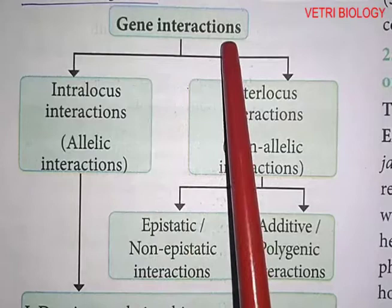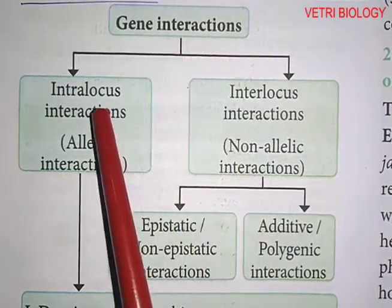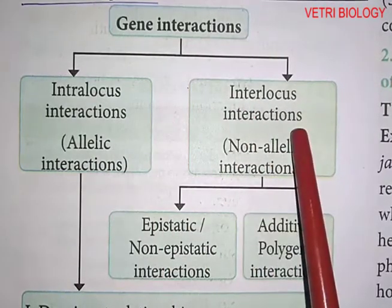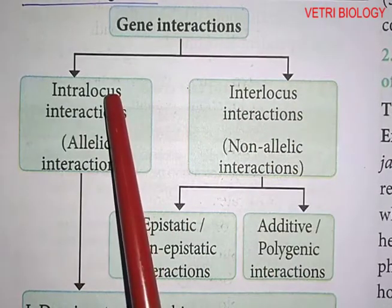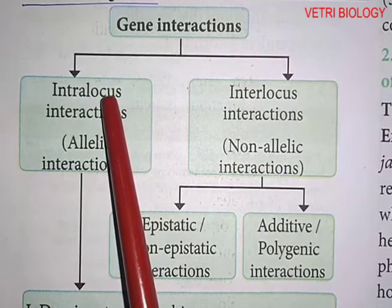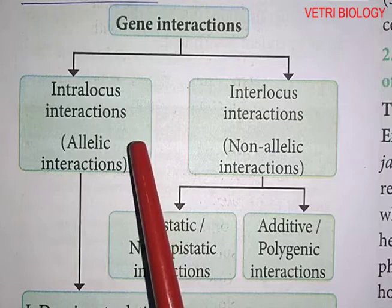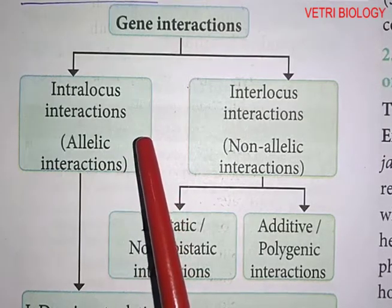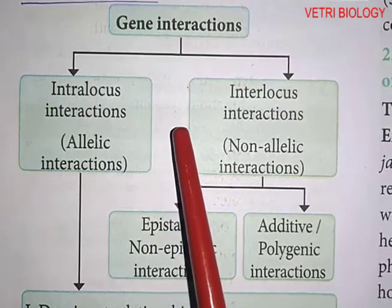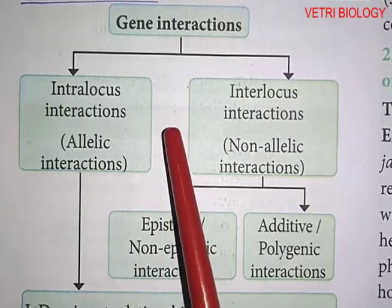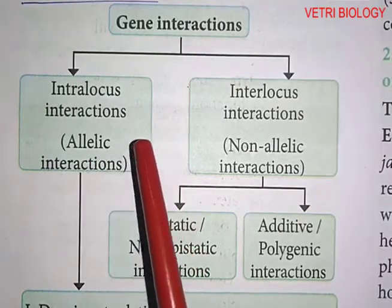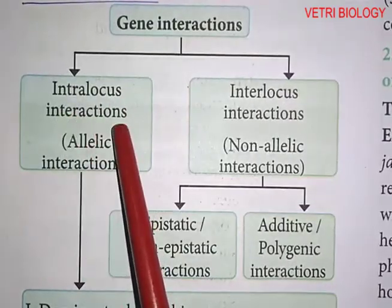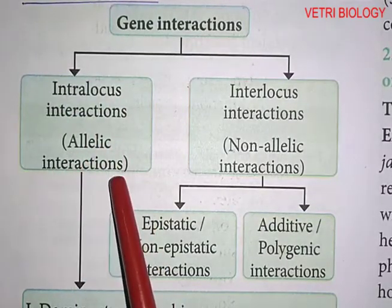Gene interaction is classified into two types: intralocus interactions and interlocus interactions. For example, alleles at one locus — capital T, capital T — are alleles of that locus; small t, small t are also alleles of that locus. Intralocus interaction is also called allelic interaction.